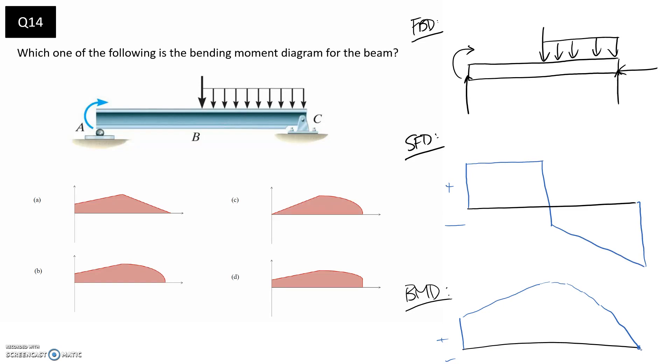So that would be my answer for what the bending moment diagram should look like. So now we have to go back and compare this to what we see for the options.